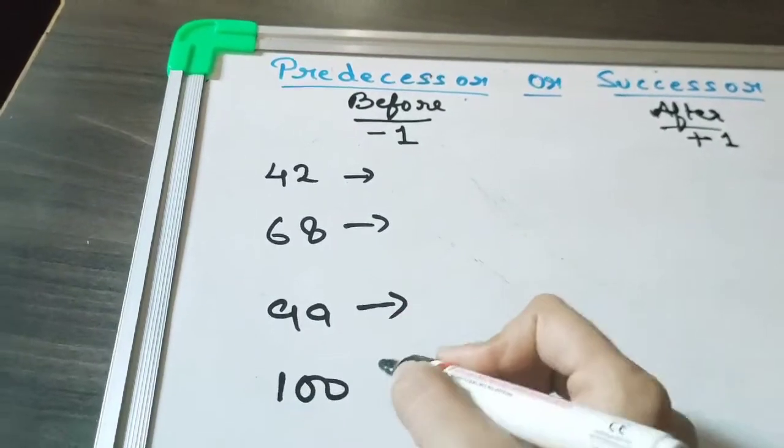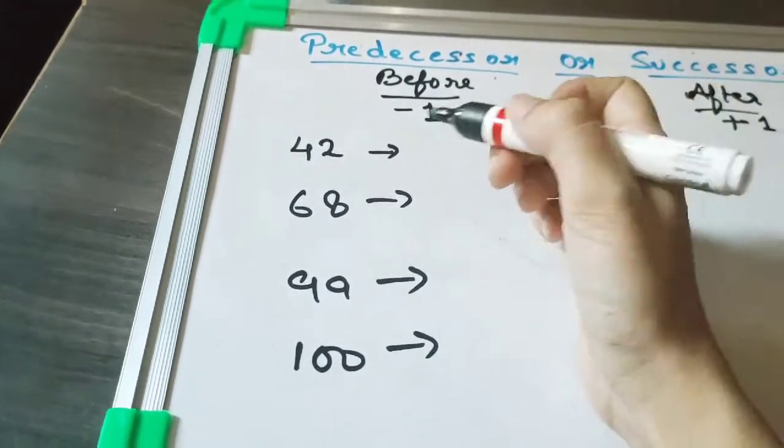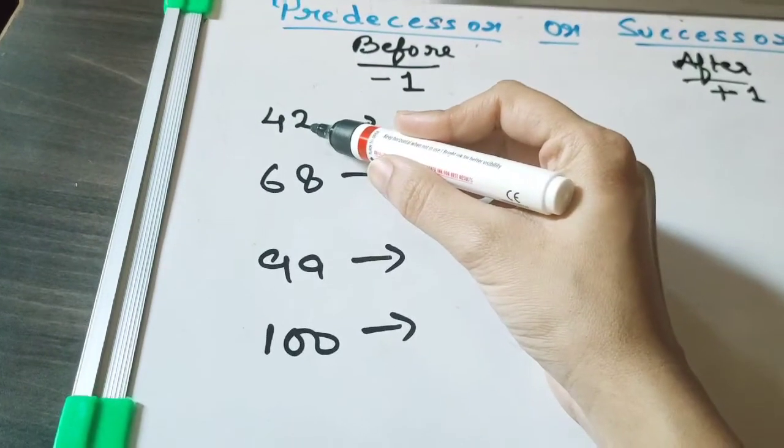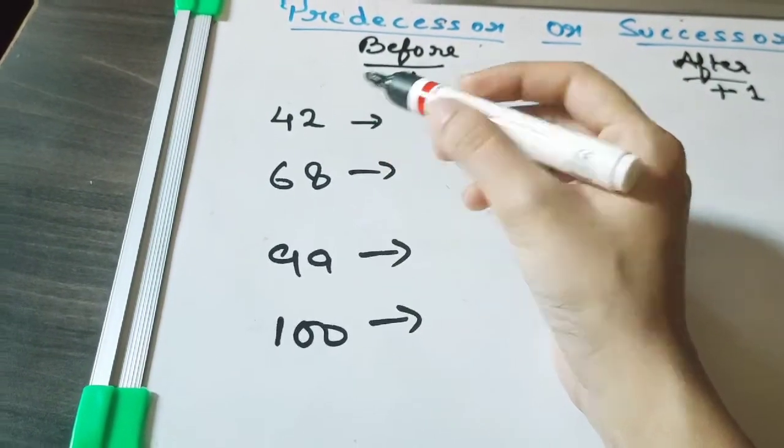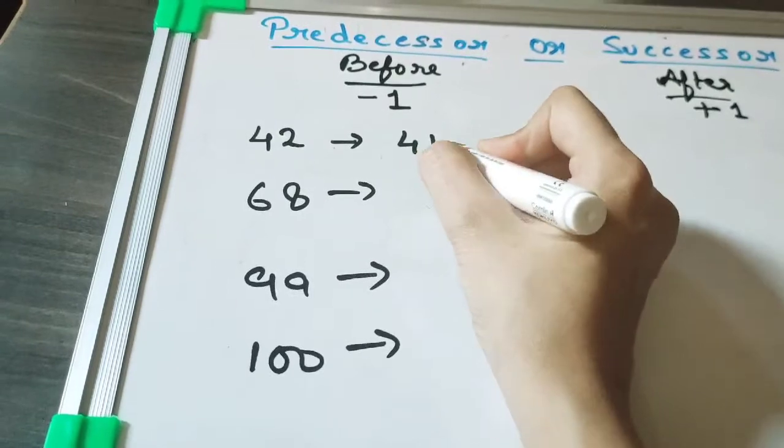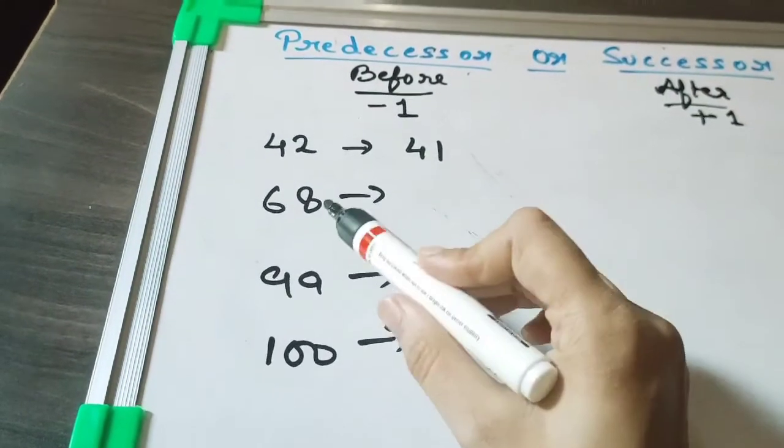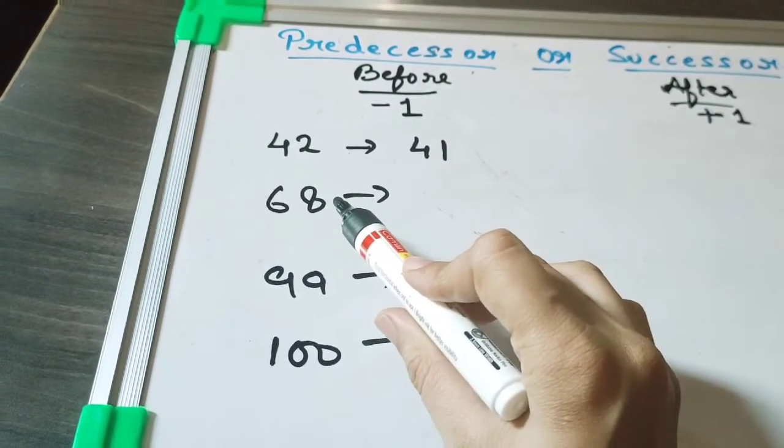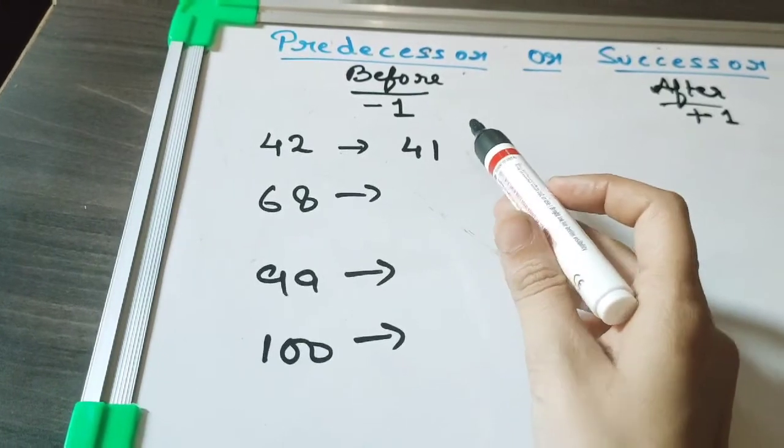Predecessor means minus 1. So if we subtract 1 from 42, what we will get? Yes, that is 41. And 68 is there, we have to subtract 1, we have to minus 1, so we will get 67.